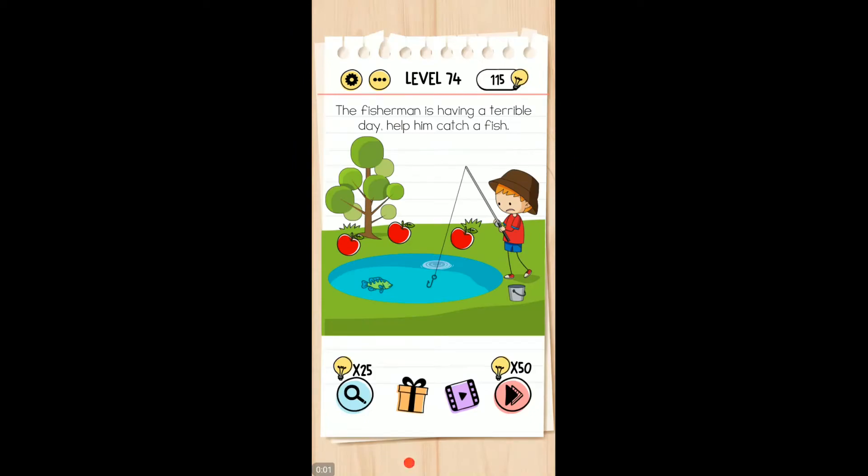We are playing level 74 of the brain test tricky puzzles. Thanks for joining me my friends. So the fisherman is having a terrible day, help him catch a fish.